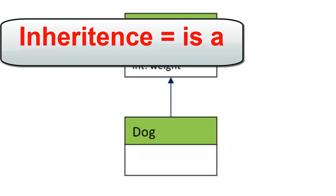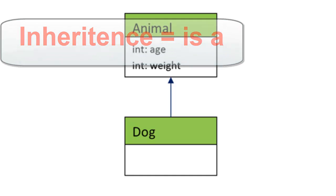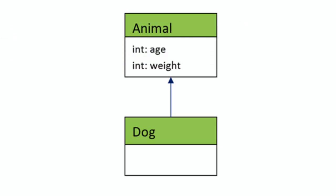Inheritance is a relation which inherits the attributes and behaviors from a parent class. For example, a dog is an animal — meaning animal is the parent class and dog is the child class.